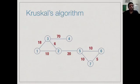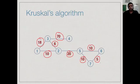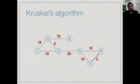Let us look at the same example we saw for Prim's algorithm. The edges have been sorted: 5 is the smallest, then 6, then three edges of weight 10, then 18, then 20, and then 70. We pick the smallest edge, weight 5, and start by adding it to our tree.